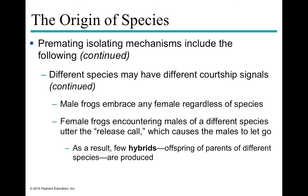Another example of behavioral isolation is in frogs. Male frogs are not picky — they embrace any female regardless of species. But a female frog encountering a male of a different species will utter a release call, which causes the male to let go of her. This results in few or no hybrid offspring — offspring of parents from different species.